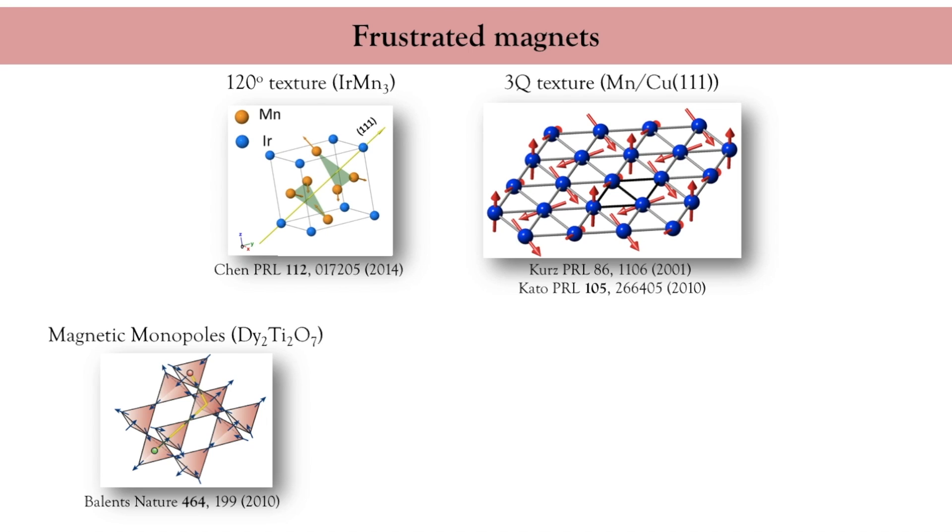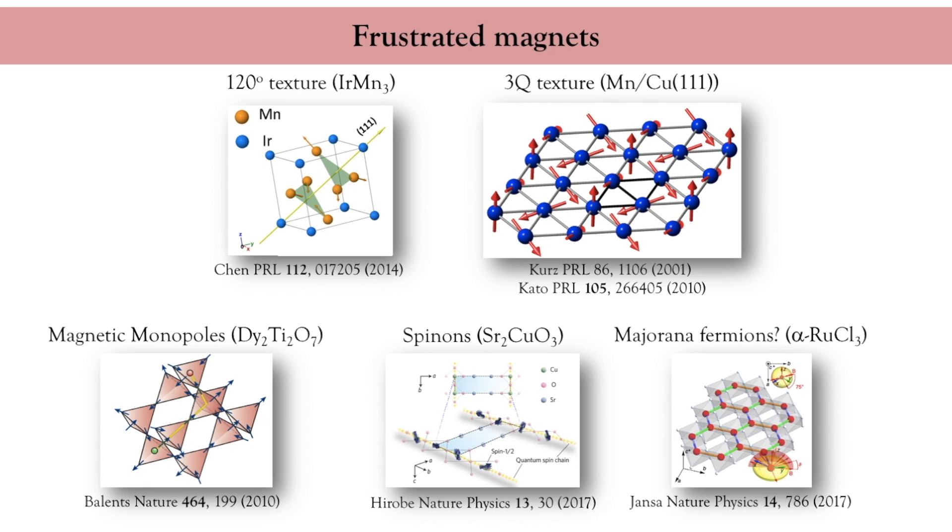Pyrochlore magnets are also the host of very interesting mechanisms, including magneto-Hall effect and magnetic monopoles. Other materials like strontium cuprates host one-dimensional anti-ferromagnetic chains. And as such, they support so-called spinons, which are fermionic spin excitations. And to finish this very quick overview, some materials like alpha ruthenium chloride host even more exotic quasiparticles, called Majorana fermions. These frustrated magnets and these fractional excitations are out of the scope of this lecture, but they nicely illustrate the diversity of magnetic materials.